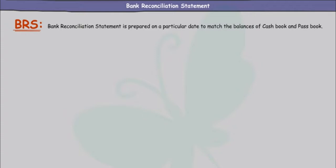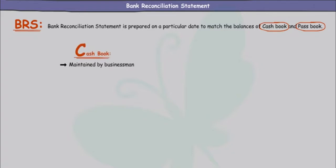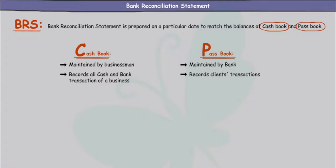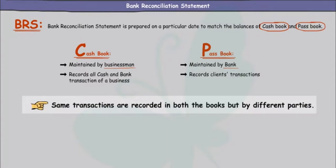Now first of all, let's understand the meaning of these terms. I am sure that you must have heard them in your daily life. The first term is cash book. It is basically maintained by the businessman to record all the cash and bank related business transactions. On the other hand, pass book is maintained by a bank to record its clients' transactions. So, while cash book is maintained by businessmen, pass book is maintained by the bank. Thus, we can conclude that the same transactions are recorded in both the books but by different parties.